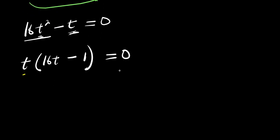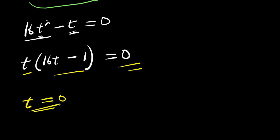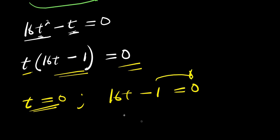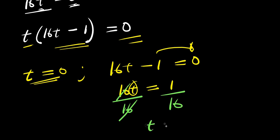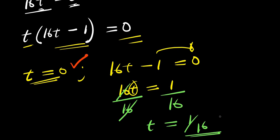We equate each factor to zero. From t = 0, we get the first solution: t = 0. From 16t minus 1 = 0, we get 16t = 1, and dividing by 16 gives t = 1/16. So we have two solutions: t = 0 and t = 1/16.